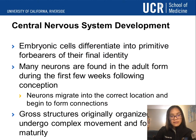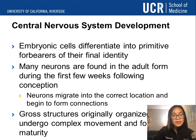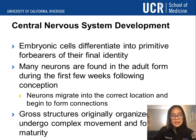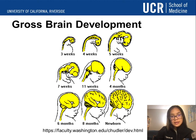Embryonic cells differentiate into primitive forebears of their final identity. Many neurons are found in their adult form during the first few weeks of conception. Then these neurons migrate to the correct location and begin to form connections. Structures we know of such as the heart, the arms, and the legs are originally organized linearly and then undergo complex movement and folding to become mature cells.